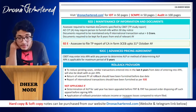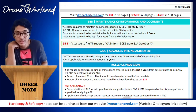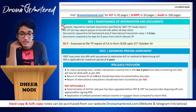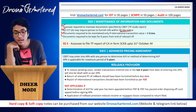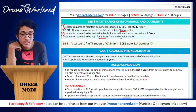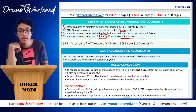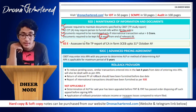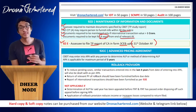Section 92D: the assessee is required to maintain documents specified by CBDT, including a TP study report. The AO or CIT (Appeals) may require the person to furnish information within 30 days of notice. Documents are required to be maintained only if the international transaction value exceeds 1 crore, and must be kept for 8 years from the end of the relevant assessment year. Section 92E: the assessee must file a TP report from a CA in Form 3CEB by 31st October of the assessment year.